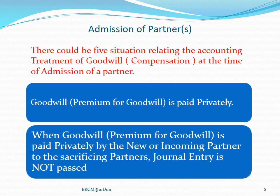Now the question comes: we have discussed existing goodwill already in the books. What will be the treatment of the compensating value of goodwill, or the goodwill which a new partner is going to share in future? There could be five situations relating to the accounting treatment of goodwill at the time of admission of a partner, and we will discuss all five one by one. Situation number one: when goodwill premium is paid privately — meaning the gaining or new partner privately pays the sacrificing partner. When goodwill is paid privately by the new or incoming partner to the sacrificing partner, there is no need to make any journal entry in the books of accounts, because they are doing it separately, not in the firm, not in the books of the firm. Since no transaction is happening inside the firm — it is happening privately — there is no necessity to record it.